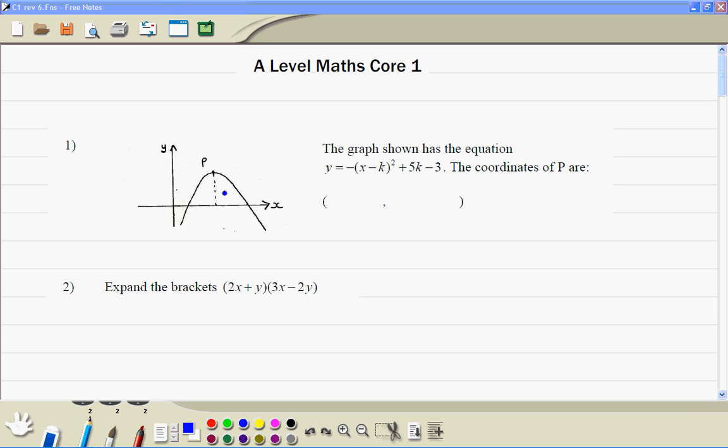Question 1, this point P is called the vertex, which basically means a turning point. Then the coordinates of this point...